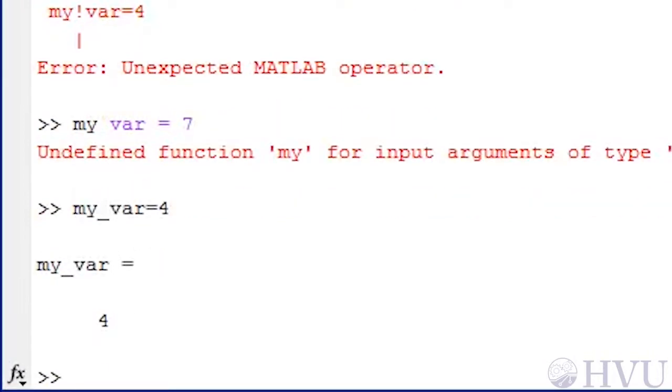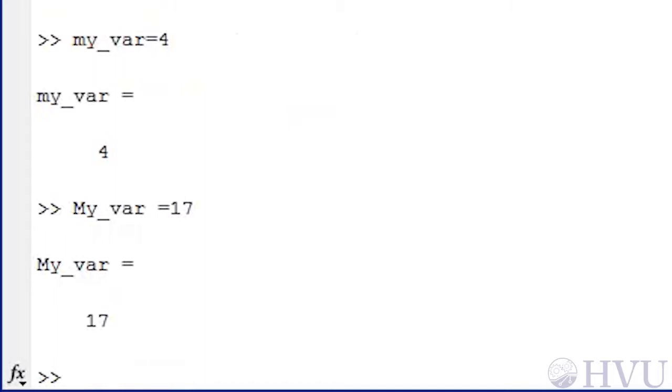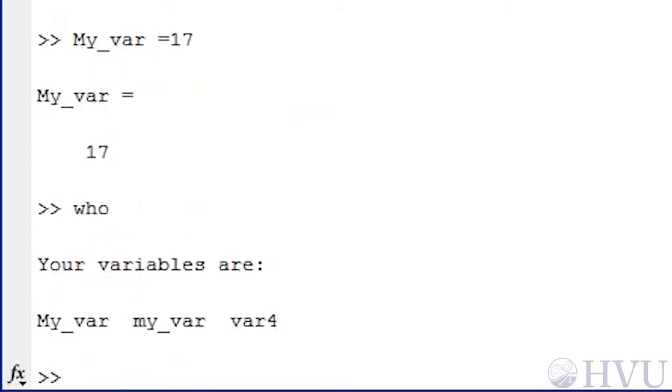Finally, let's create a variable, my underscore var with a capital M, to show that variables are case sensitive. Now, if we look at the contents of the workspace, we see that my underscore var and my underscore var with a capital M are two distinct variables containing different values.